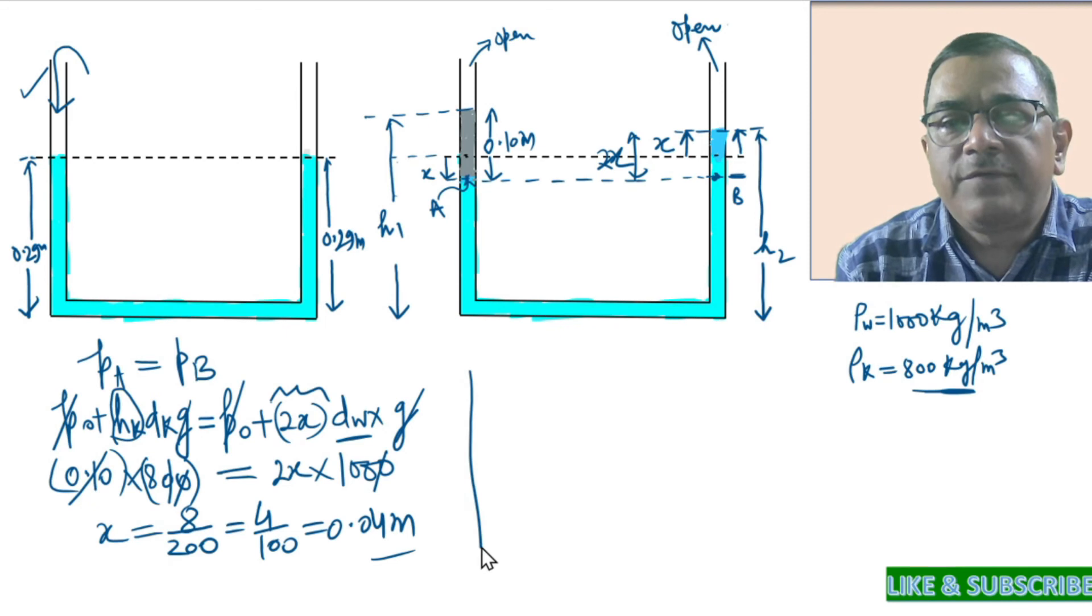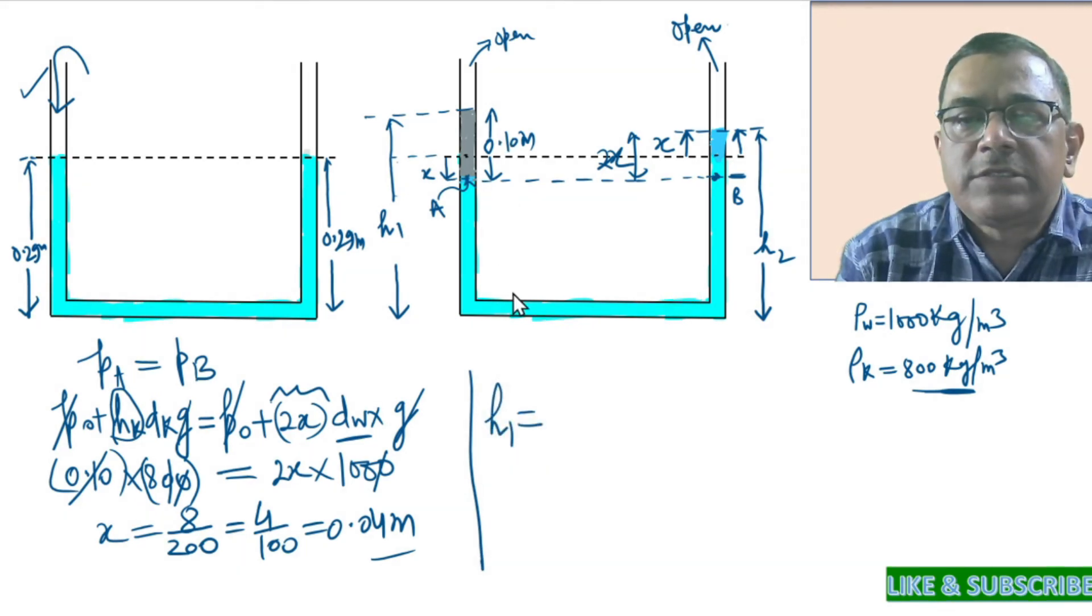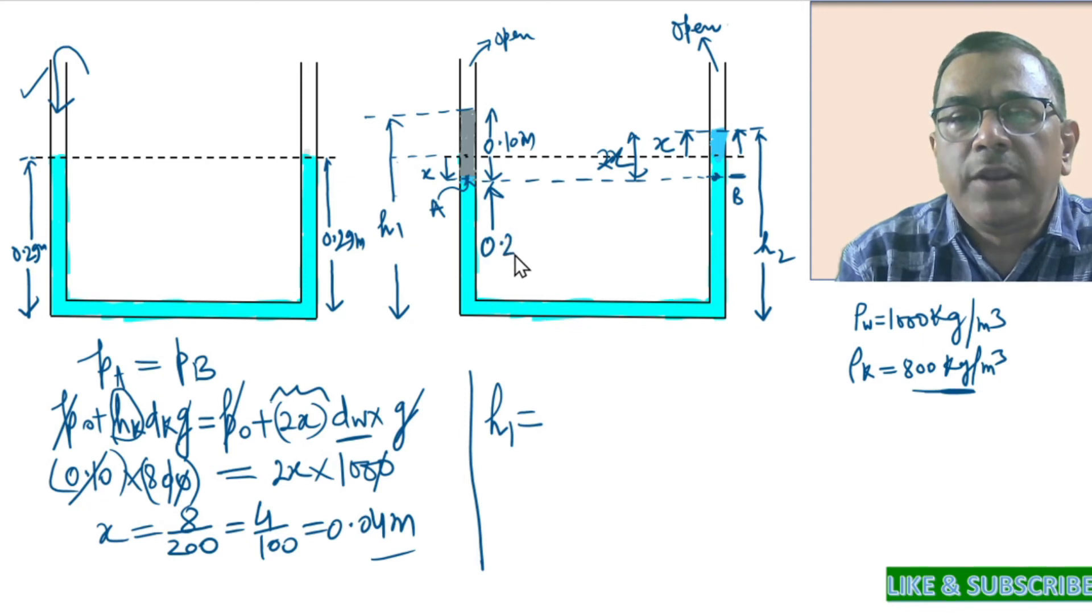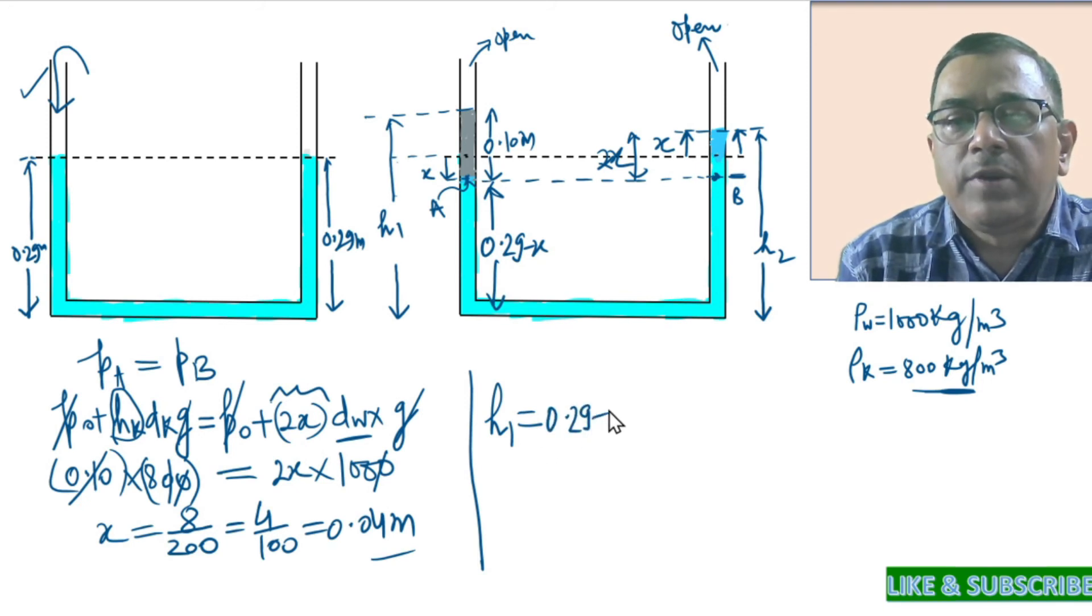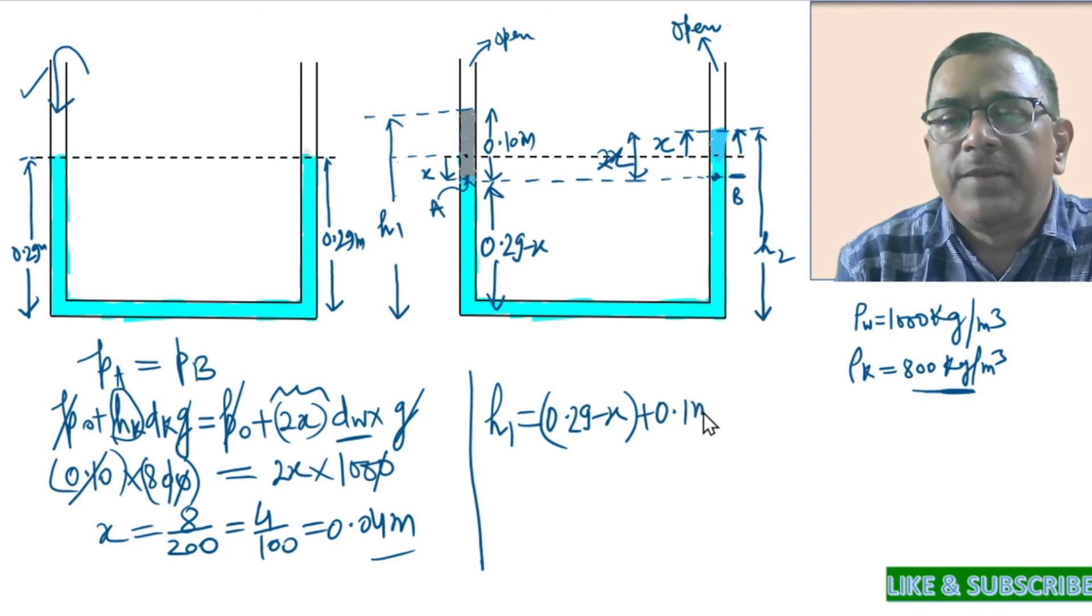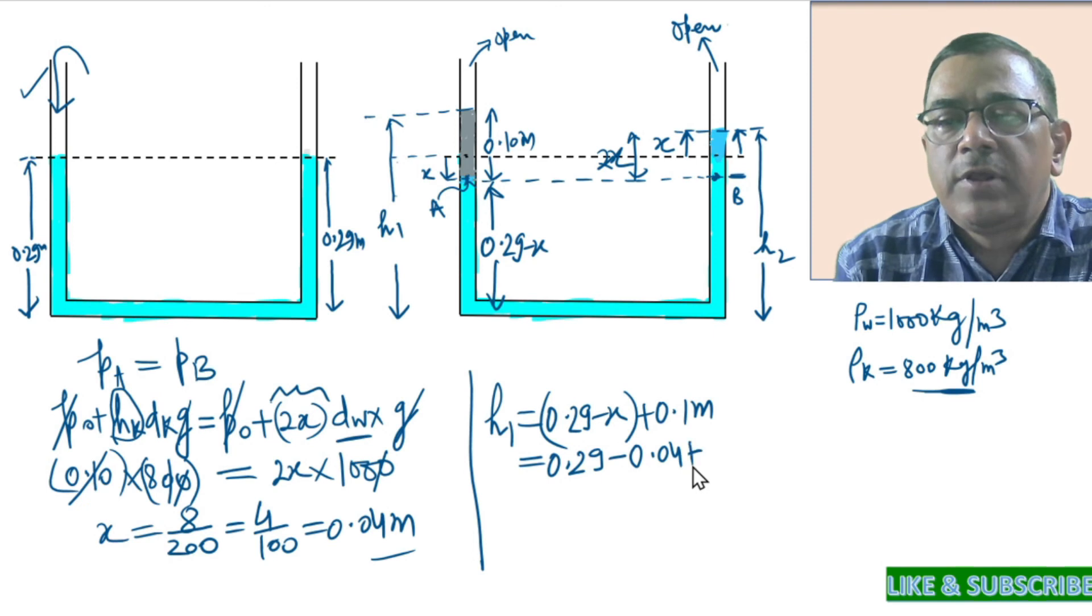Now next, let's see how much is H1. You see, this separation equals 0.29 minus X. And that is why H1 equals 0.29 minus X plus 0.1 meters. And this equals 0.29 minus 0.04 plus 0.1 meters.